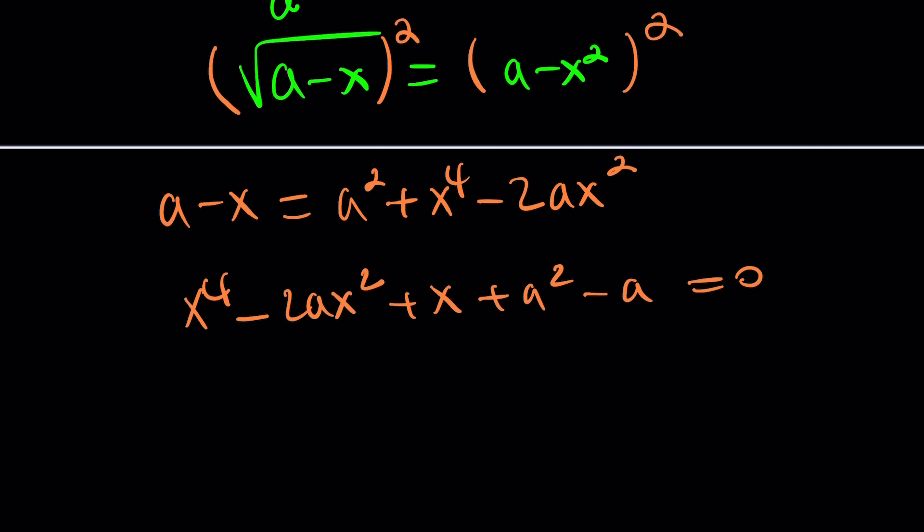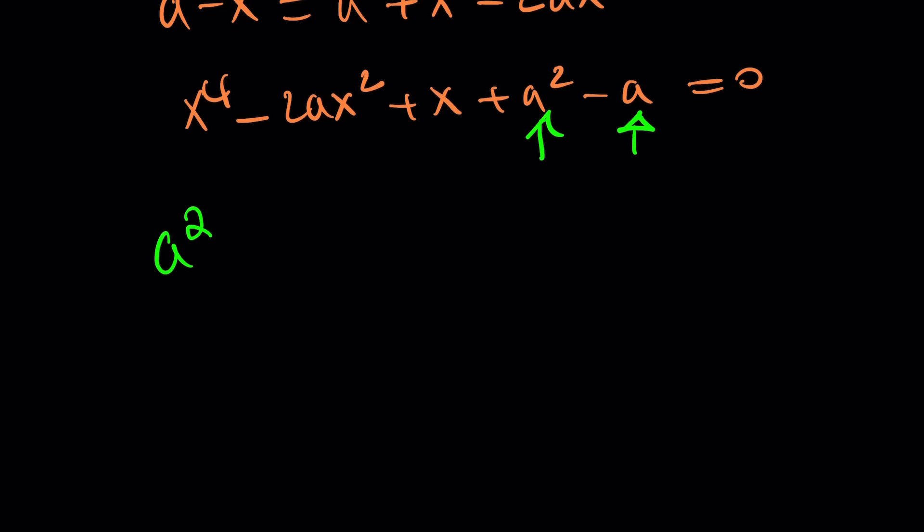Yay! A minus x. A squared plus x to the 4th minus 2ax squared. Now, you may want to do this: x to the 4th minus 2ax squared plus x plus a squared minus a equals 0. Good luck. You ended up with a quartic that is even worse than the first quartic we found. That's not good. But, guess what? There is a trick here. Because of the presence of a squared with a. Yes. This is quartic. But, using a neat trick, you can make it quadratic. And, this is a technique commonly used for competition level problems.